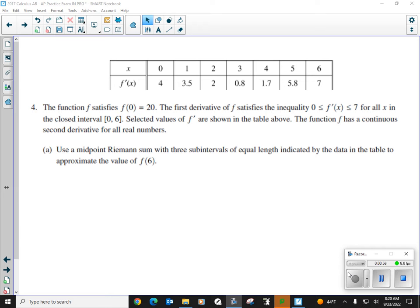So number four states, the function f satisfies f of zero equals 20. That looks like it might come in handy at some point. The first derivative of f satisfies the inequality where the first derivative is greater than or equal to zero and less than or equal to seven. That is our interval, as shown in the table above, for all x in the closed interval from zero to six.